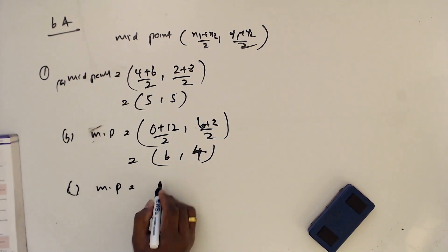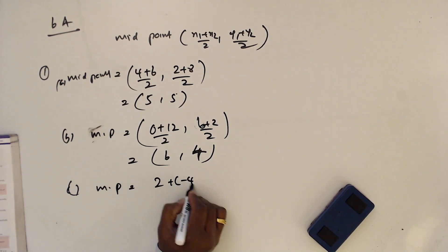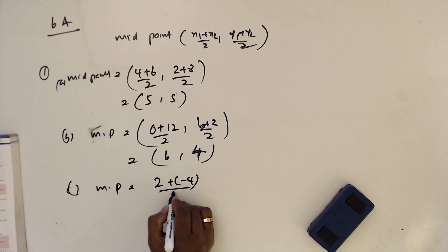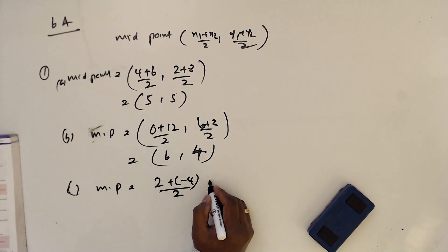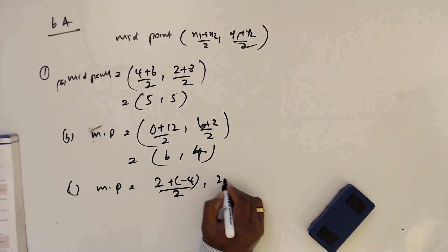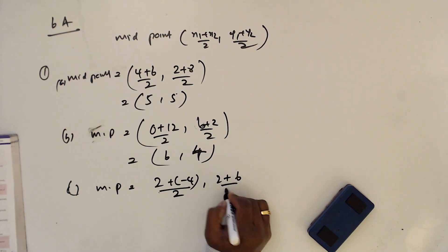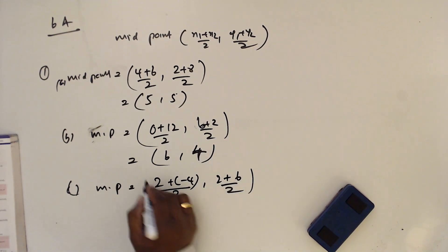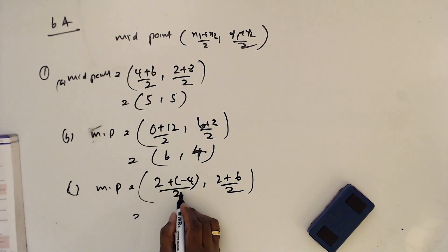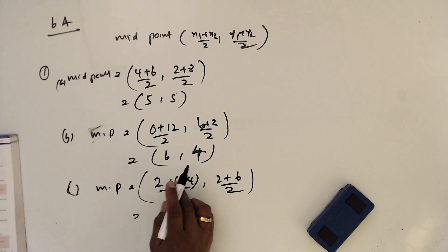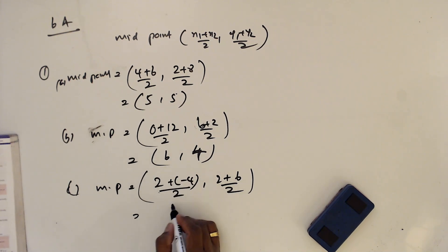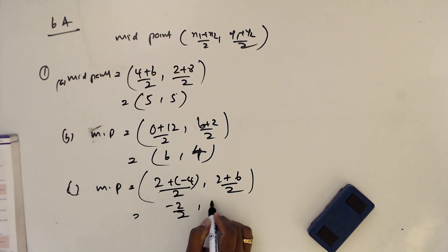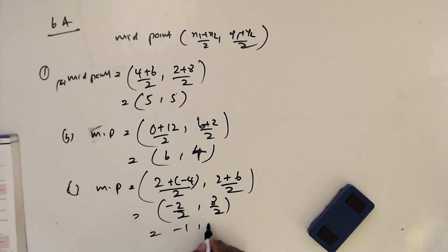Part c: midpoint equals (2 plus minus 4) over 2, and (2 plus 6) over 2. This gives 2 minus 4 which is minus 2 over 2, and 8 over 2. So the midpoint is (minus 1, 4).